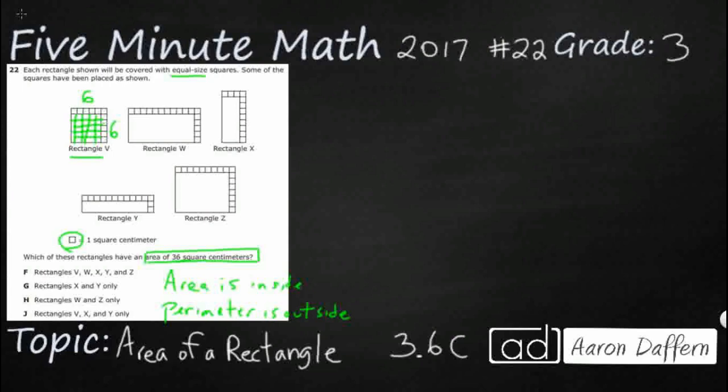So what if I were just to do 6 groups of 6? I just would do 6 and 6 and 6, 6, 6, 6, one for each row. Well guess what, that is, that's multiplication. So that's 6 times 6 and I should know that multiplication fact. That is 36 square centimeters, so hey, rectangle V is good to go because it has got 36 square centimeters.